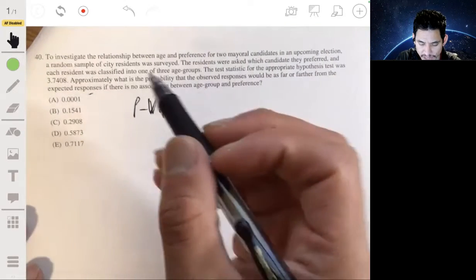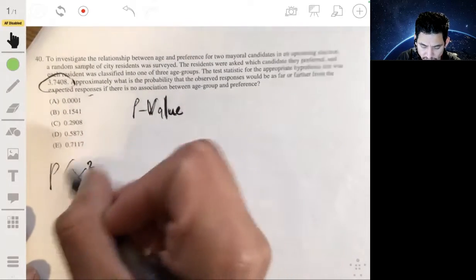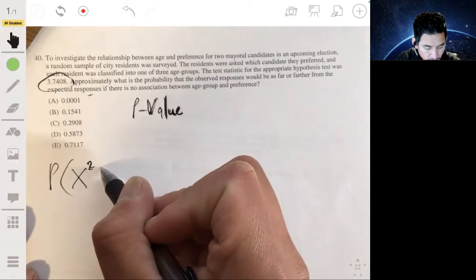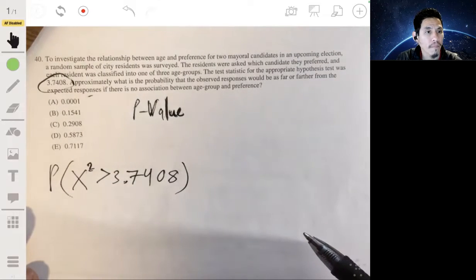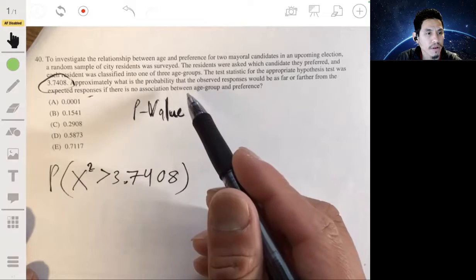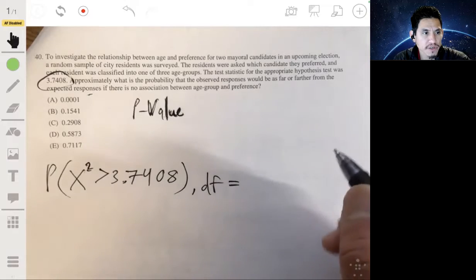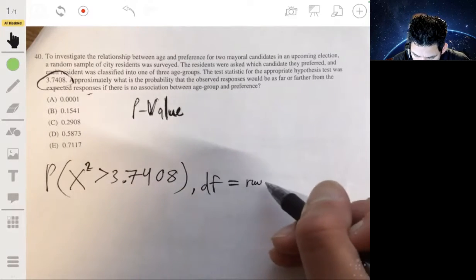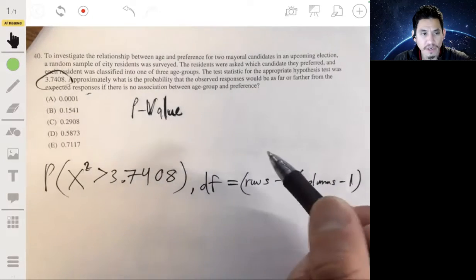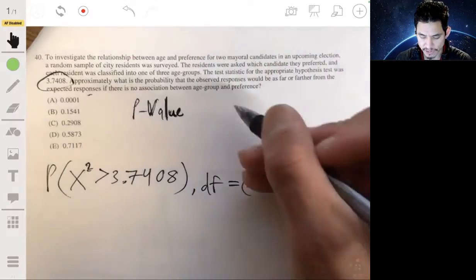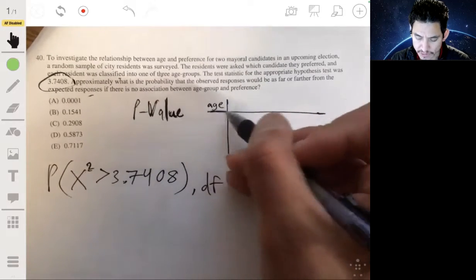So, in this case, we're going to be looking at a chi-square test for independence. This is going to be our chi-square statistic. So, we want to see what's the probability of our chi-square statistic being greater than 3.7408. And we just need our degrees of freedom here. Degrees of freedom will be number of rows minus one times number of columns minus one. So, how do we figure this out? Well, let's just make a hypothetical table of what this could look like.